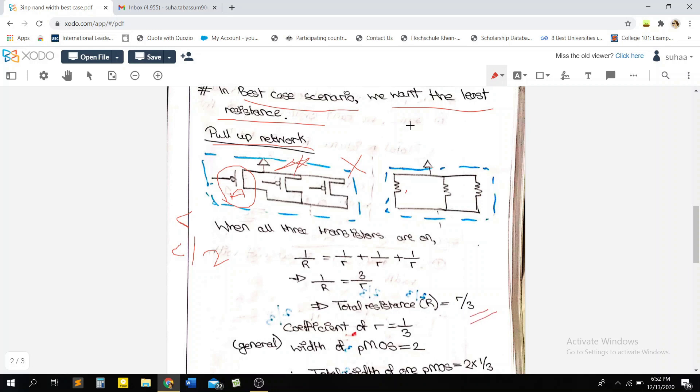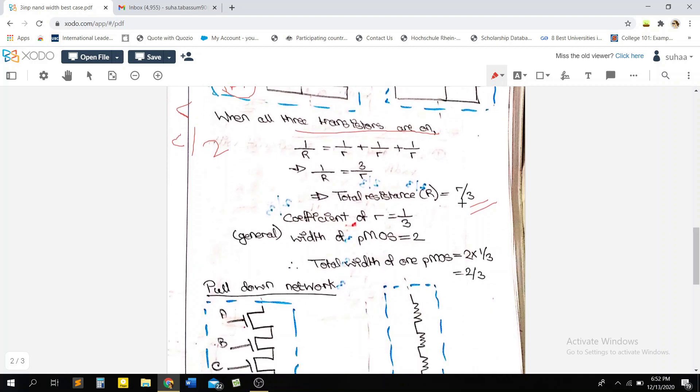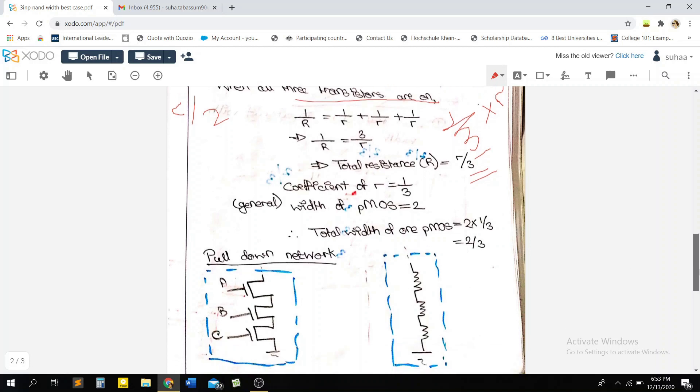And since we want the least overall resistance, therefore this is the combination that we're going to take. The three transistors are on. Alright, so my total resistance R is equal to R by 3. And remember in the previous video, we discussed that we need to find the coefficient of R. So the coefficient here, which basically means 1 by 3 into R, so the coefficient here is basically 1 by 3. And the general width of a PMOS, we already know that now, is 2. So we're going to multiply the 2 to get the total width of 1 PMOS. So that's done.